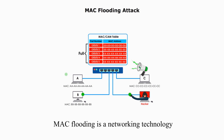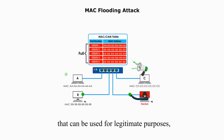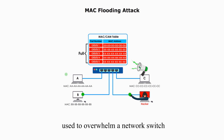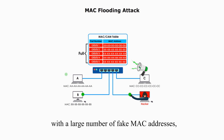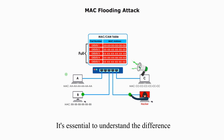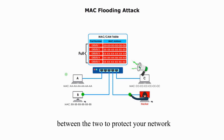In summary, MAC flooding is a networking behavior that can occur for legitimate purposes, while the MAC flooding attack is a denial-of-service attack used to overwhelm a network switch with a large number of fake MAC addresses, causing the switch to become congested and stop forwarding data. It is essential to understand the difference between the two to protect your network and secure sensitive information.